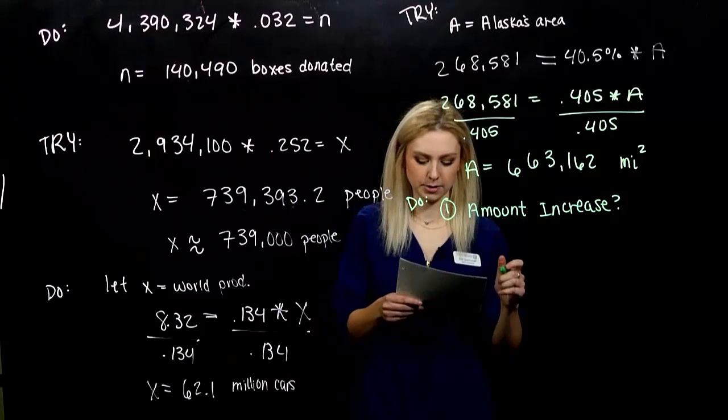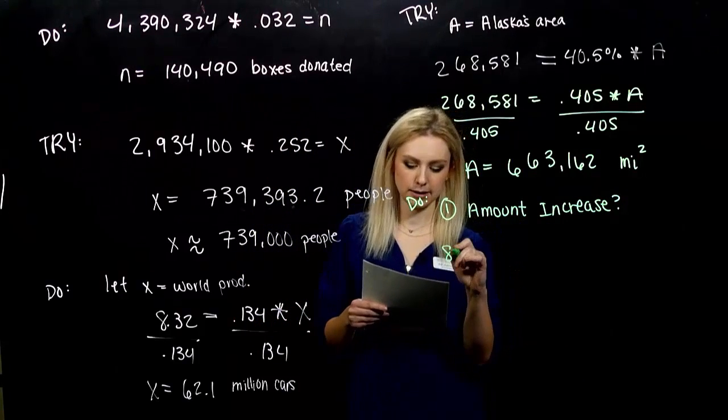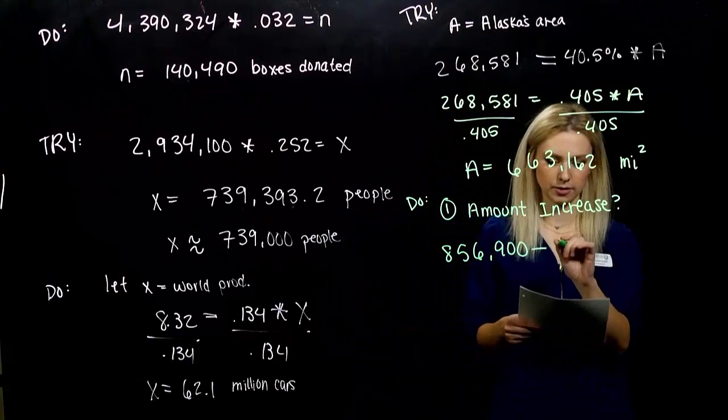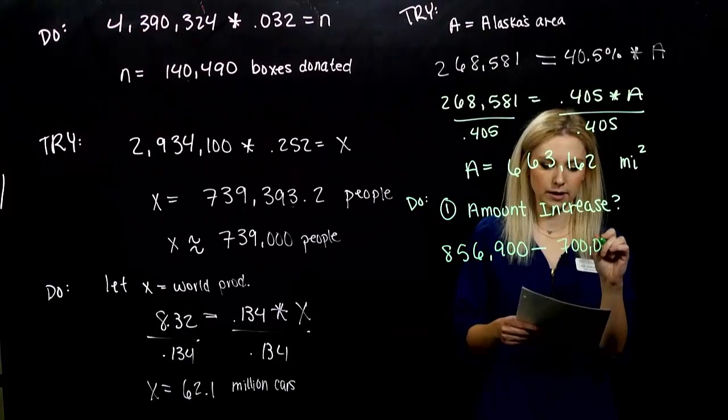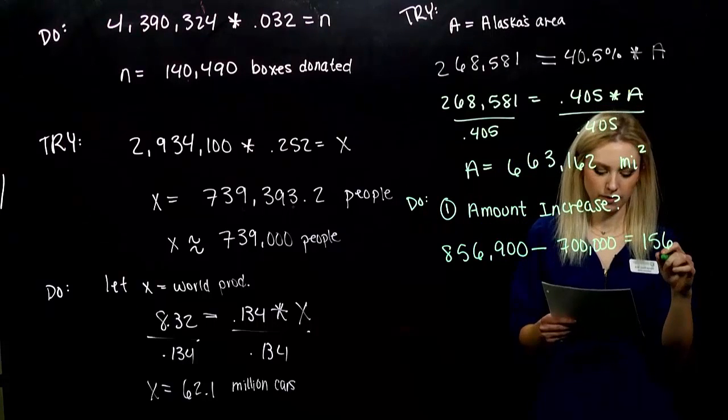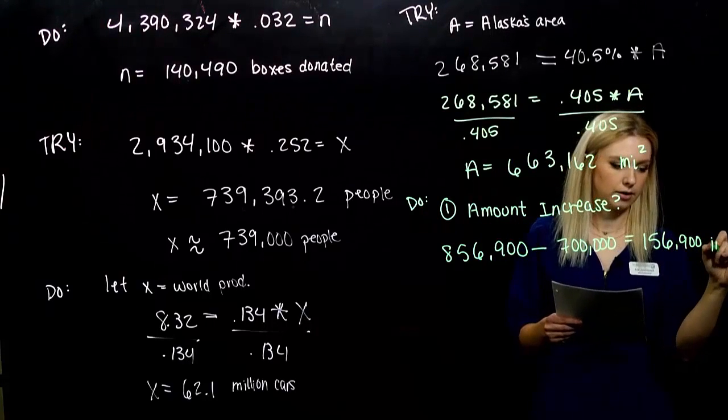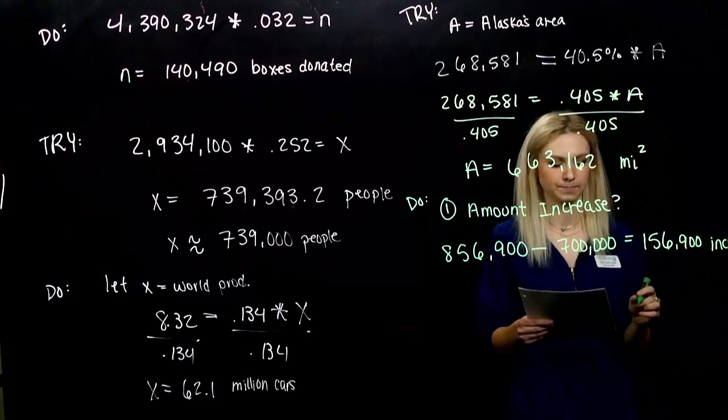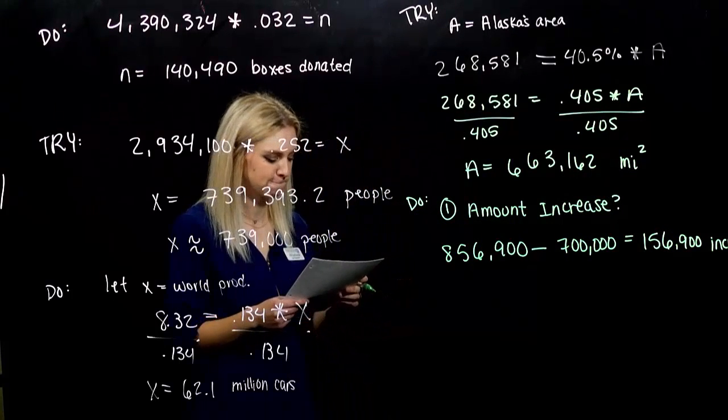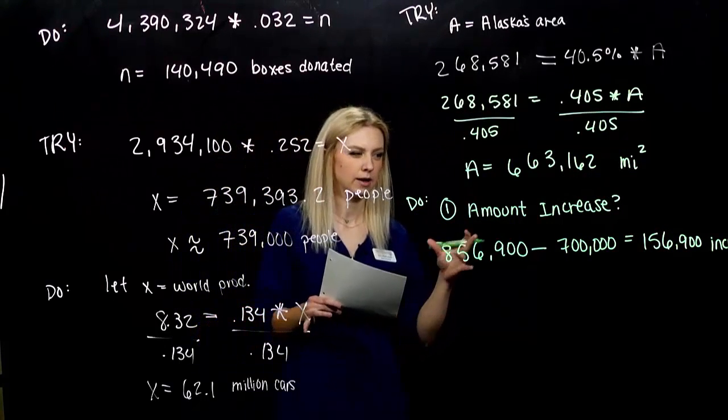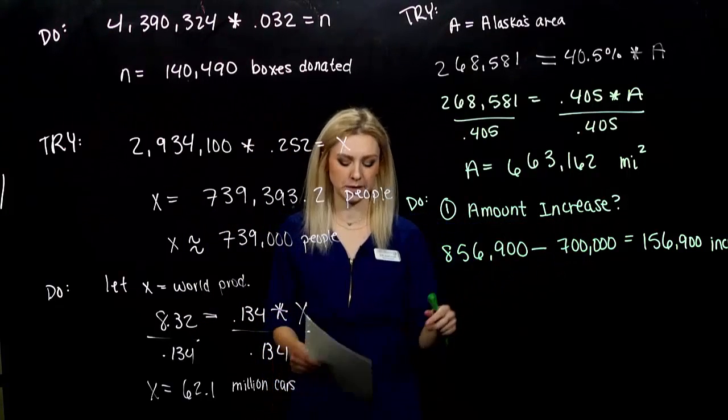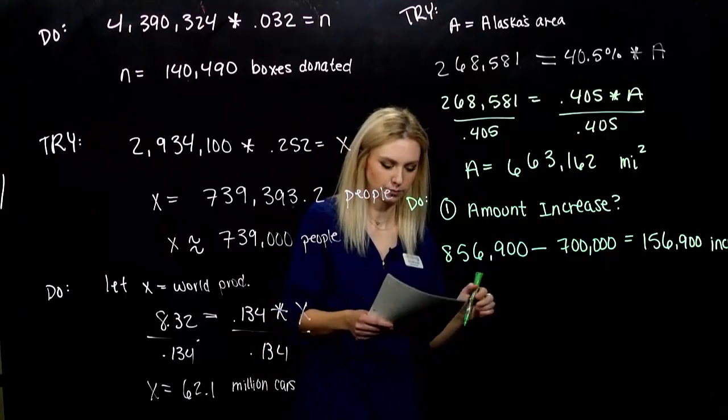So, the first thing we want to solve for is, how much did it increase for the amount? Okay. So, how many jobs in 2016 are we expecting? This many. And, we started in 2013 with 700,000. So, we're anticipating 156,900 increase. Okay. So, now we want to figure out, this is the number that I'm increasing by, what percentage is that of my total?